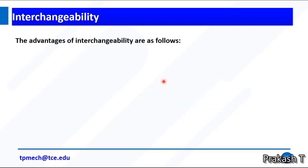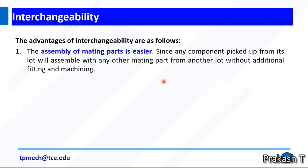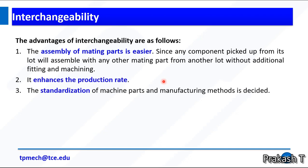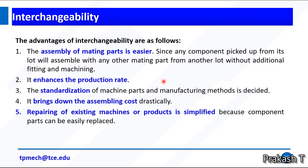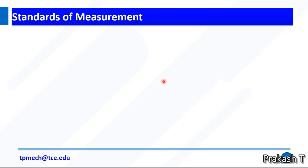The advantages of interchangeability are: the assembly of mating parts is easier, it enhances the production rate, the standardization of machine parts and manufacturing method is achieved, it brings down the assembly cost drastically, repairing of existing machines or products is simplified because component parts can be easily replaced, and replacement of worn-out parts is easy.